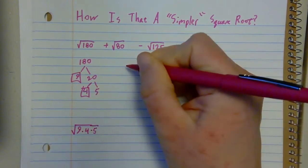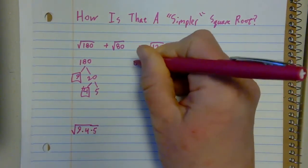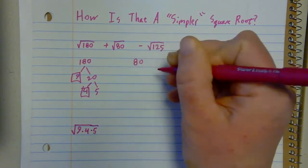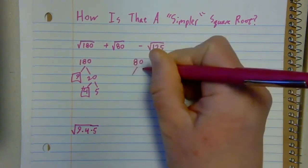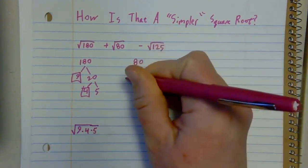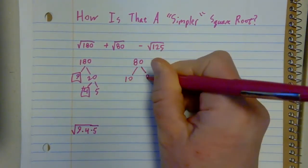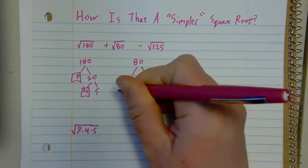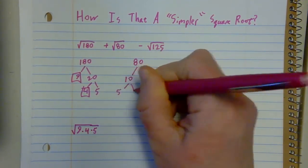Well, what about plain old 80? Well, I see that I could factor that immediately. I lunge for the 10 and the 8. 10 and 8. 10's got a 5 and 10's got a 2.